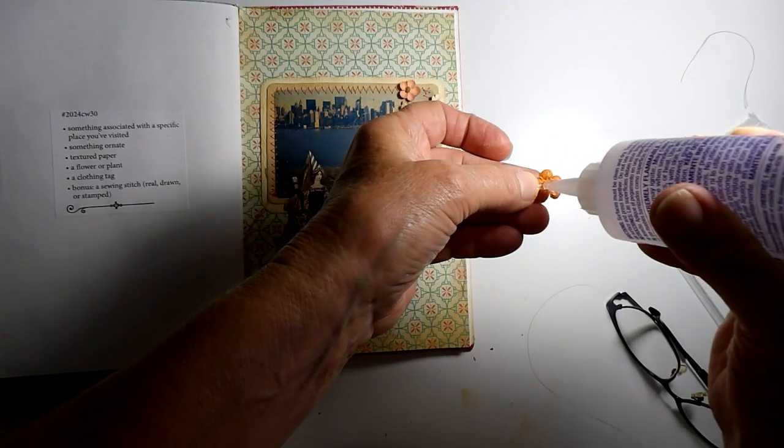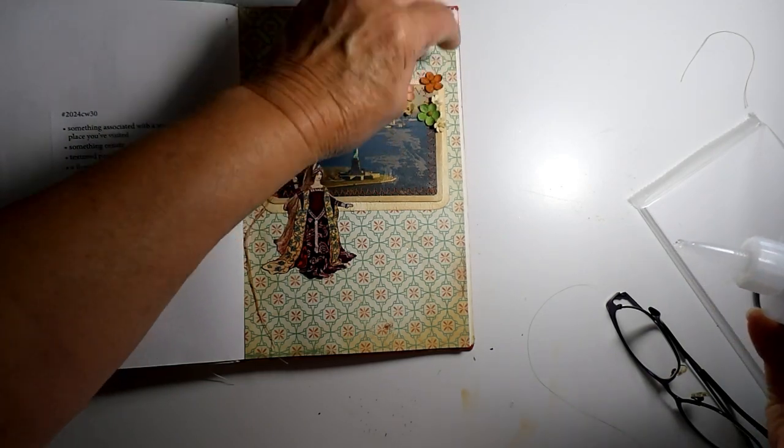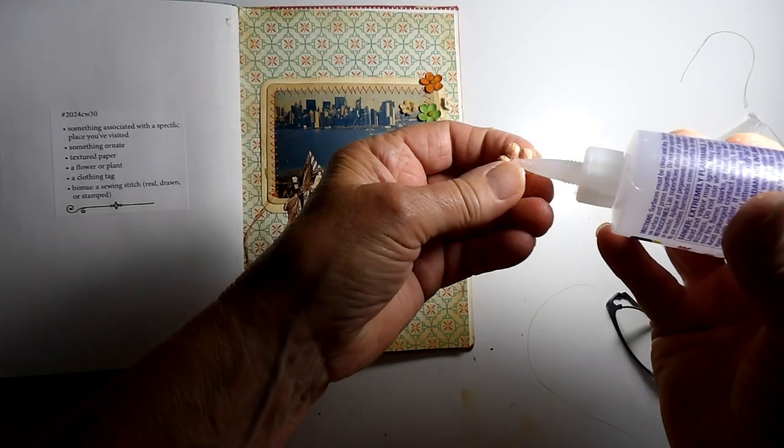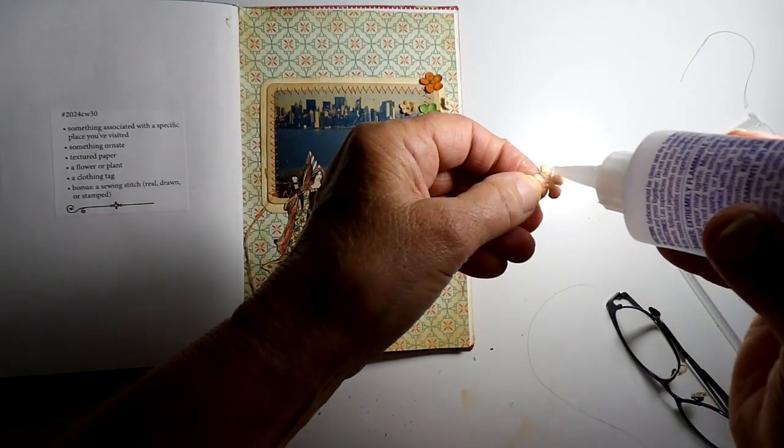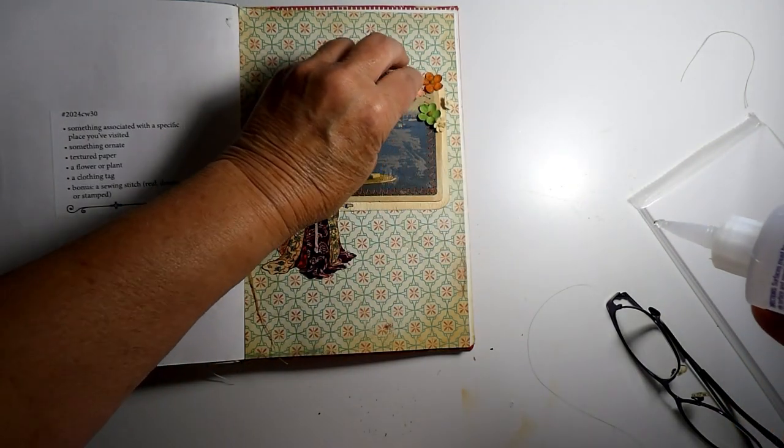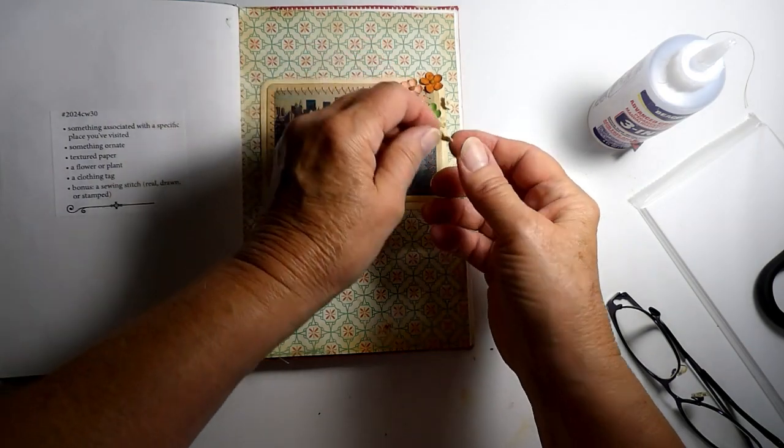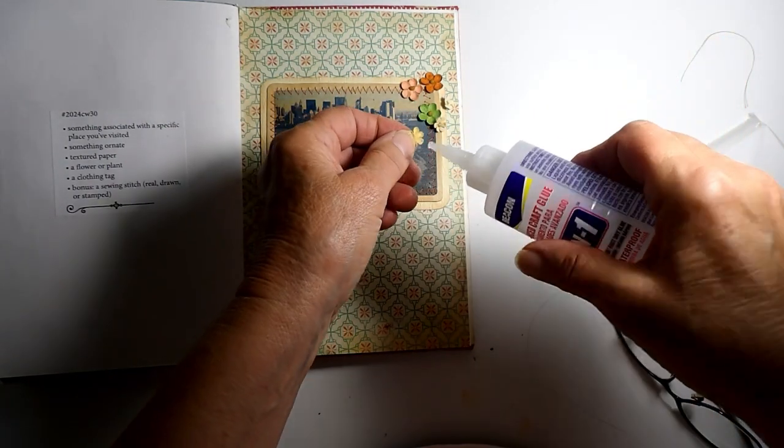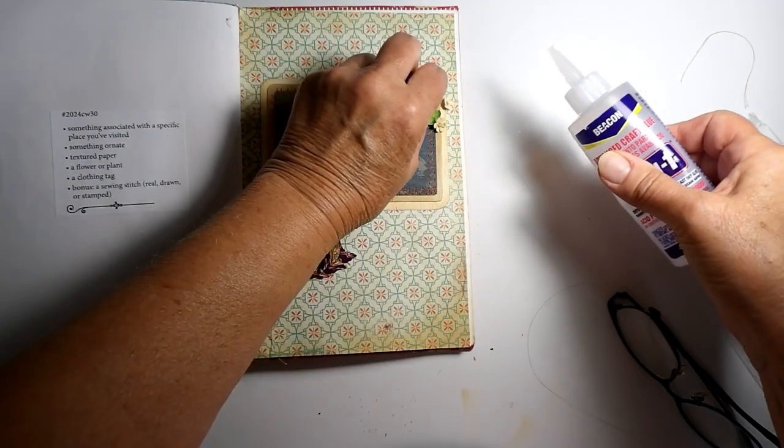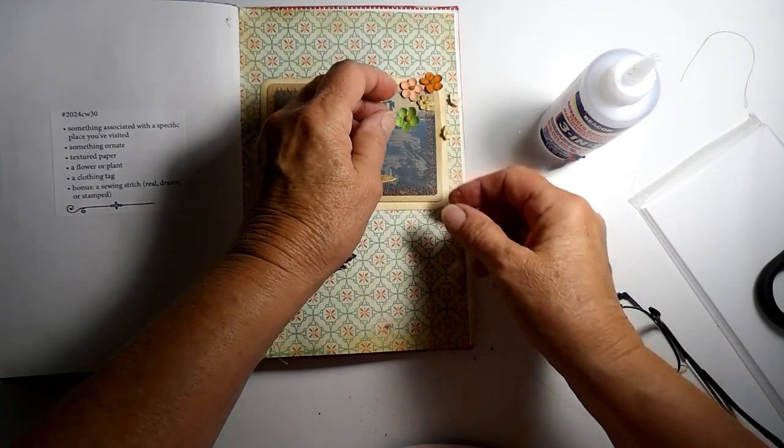How's your summer going so far? We're waiting for our daughter from Japan to come. She's coming next week, next Monday. And today is Tuesday. So we're getting excited about that.